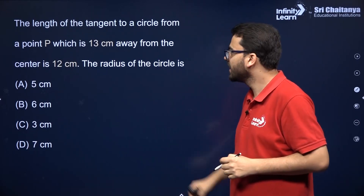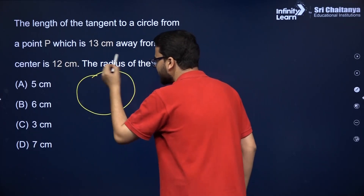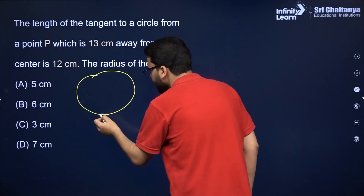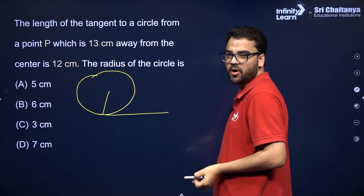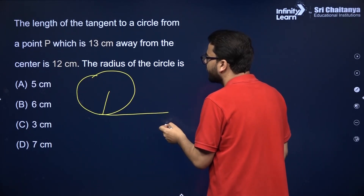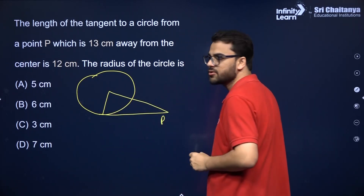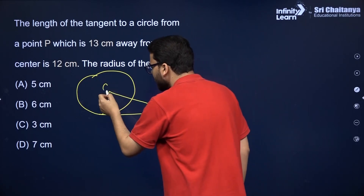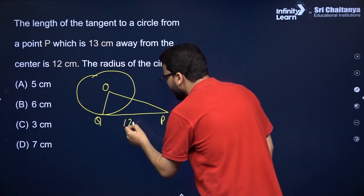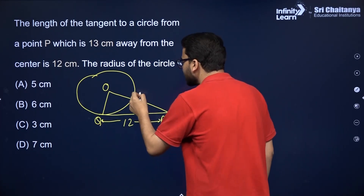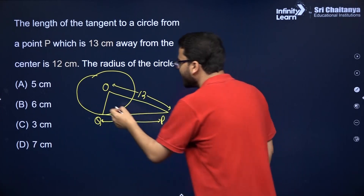So obviously you have to make the figure first. The length of the tangent to a circle — so let's make a circle. You have a circle and there is a tangent at a point to the circle. You have to join the corresponding radius through the point of contact. The external point is P, and the distance of this point from the center O is also given. Suppose this is Q. The length of the tangent is 12 centimeters and the distance of this point from the center of the circle is 13 centimeters.